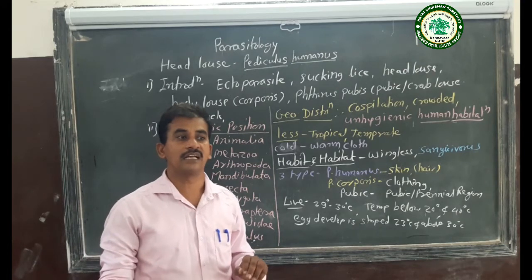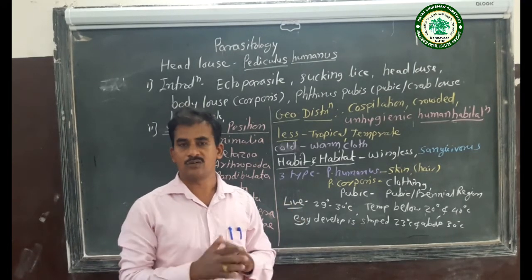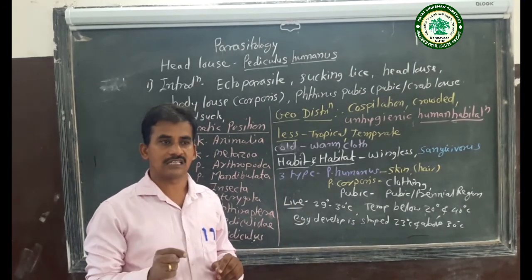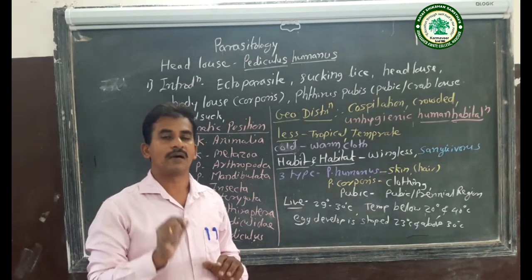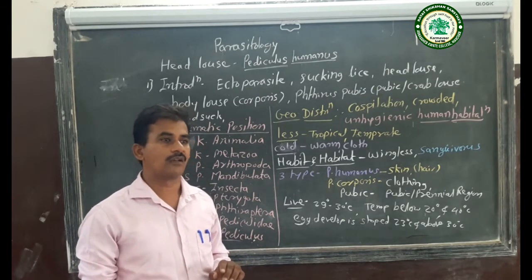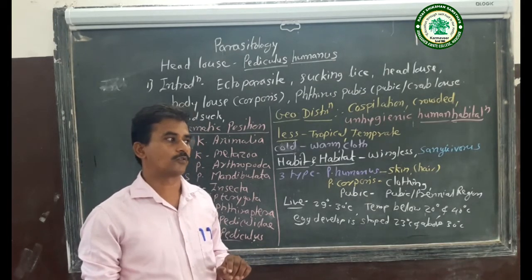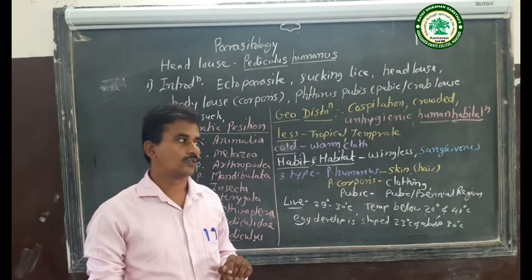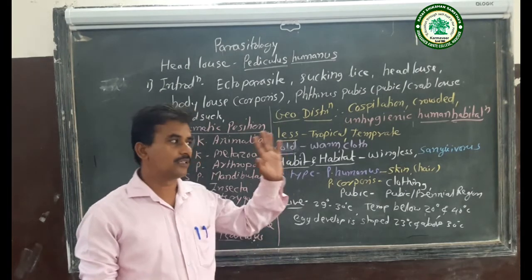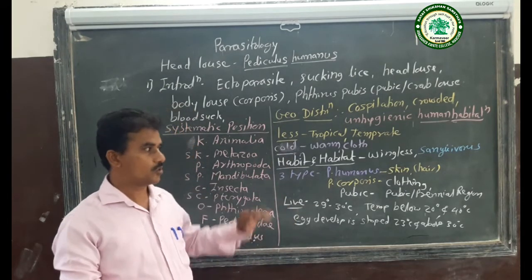The host and the parasite correlate with each other. The host is the larger animal, and the parasite is the smaller animal. For the purpose of food, shelter, and nourishment, the parasite depends on the host.